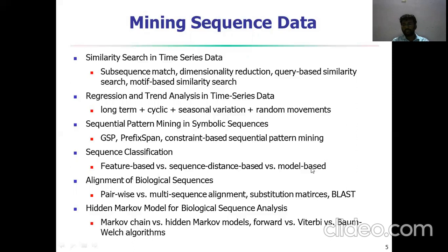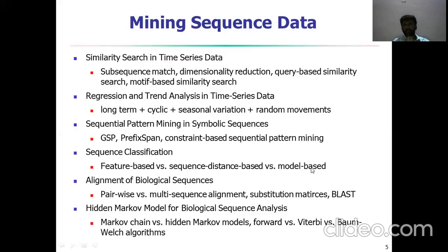The next topic is alignment of biological sequences. Major methods include pairwise and multiple sequence alignment, the substitution matrix, and BLAST. These are used in alignment of biological sequences. The hidden Markov model is also used for biological sequence analysis — Markov chains versus hidden Markov models. Markov chain techniques are applied to biological sequence methods, and analyzing viruses or editing data related to biology is referred to as biological sequence analysis.